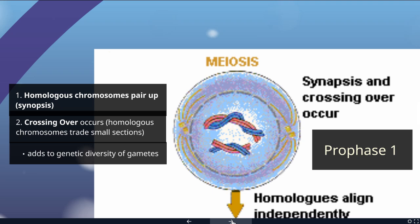This is one of the key steps to getting additional genetic diversity into our gametes. At the end of meiosis, all of the cells are going to be genetically unique, and crossing over is going to be a key part of that.